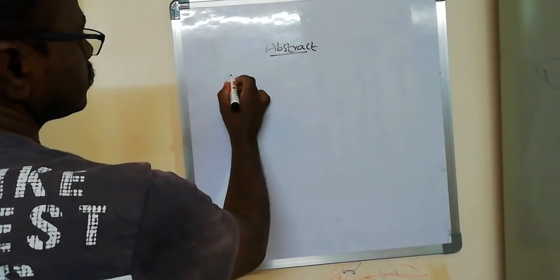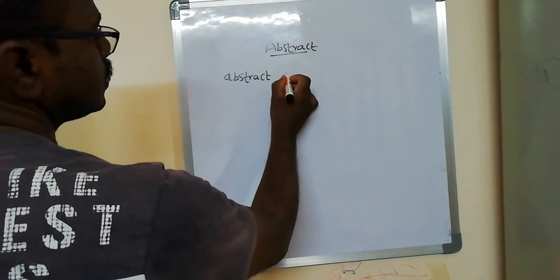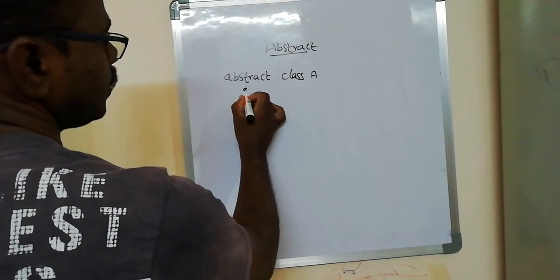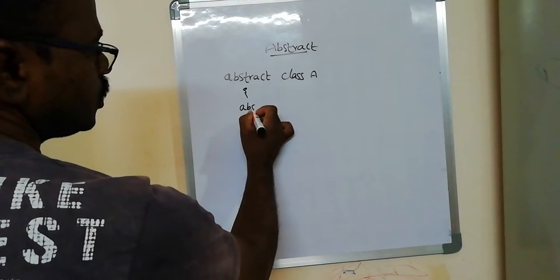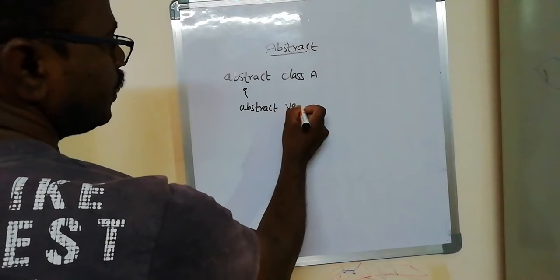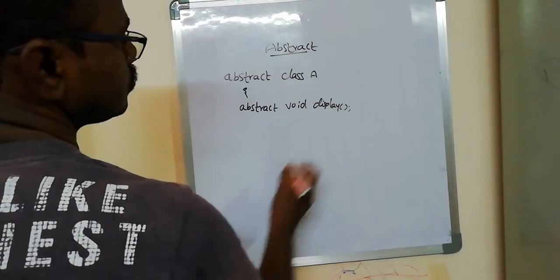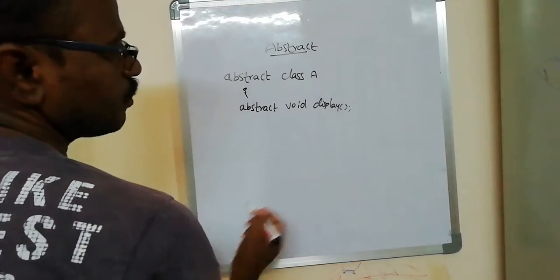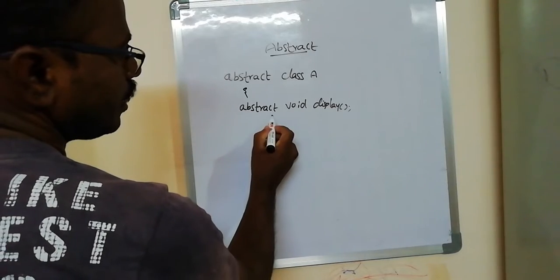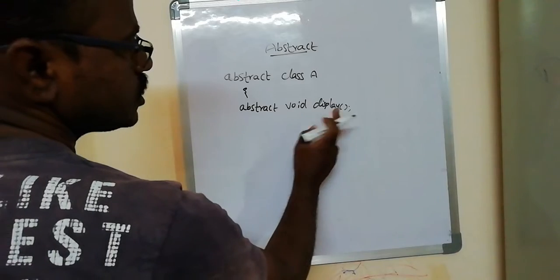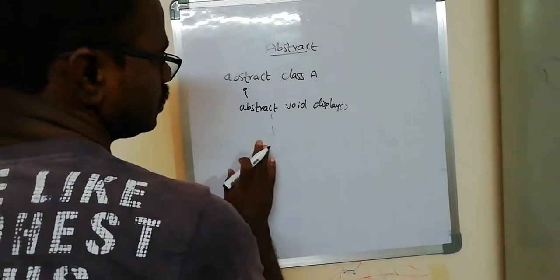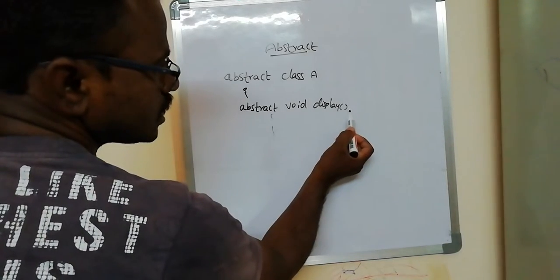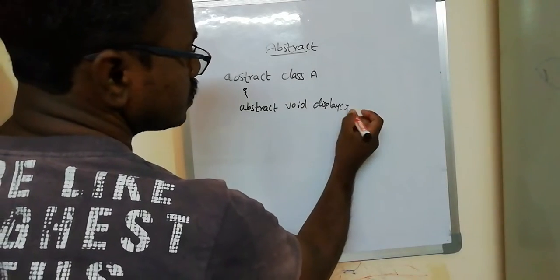Let me give a simple example. Write the keyword 'abstract', then the name of the class — for example, class A. We can open the braces. In this class we can declare one abstract method. Before the method name we must use the keyword 'abstract', for example: 'abstract void display'. This statement must be terminated with a semicolon because the abstract method cannot contain a body. If a method contains a body we do not declare a semicolon, but if it cannot contain a body it must be terminated with a semicolon.